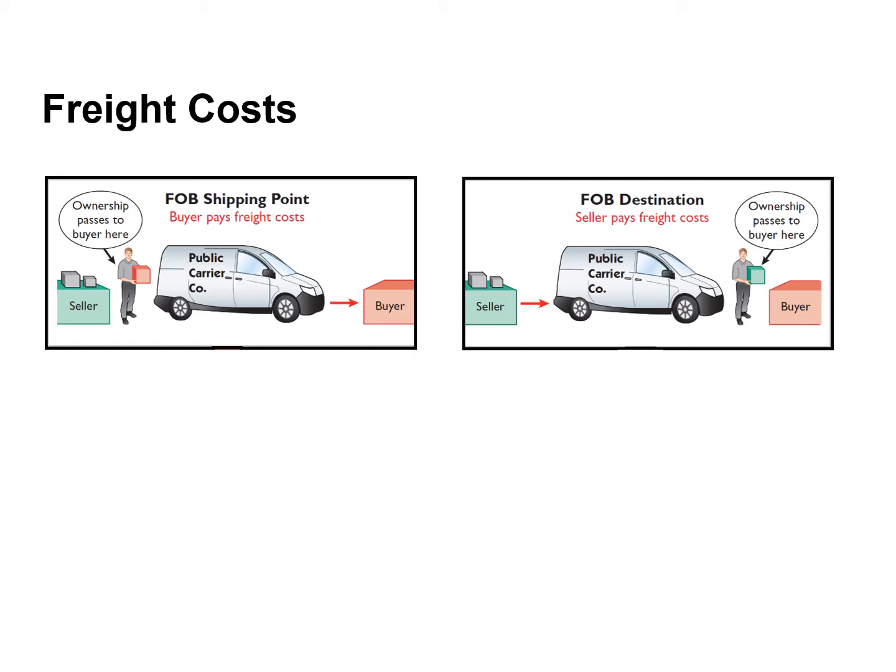The letters FOB mean free on board. FOB shipping point means that the seller places the goods free on board the carrier and the buyer pays the freight cost. Alternatively, FOB destination means that the seller delivers the goods free on board to the buyer's place of business and the seller pays the freight.